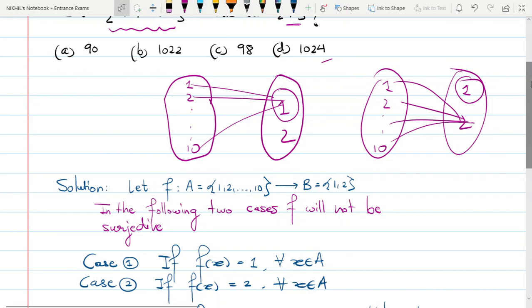So I discard these two possibilities. That's what I have written: Case 1, if f(x) equals to 1 for every x in A, where my A is of course the set 1, 2 till 10, or if f(x), I map all the elements to 2.